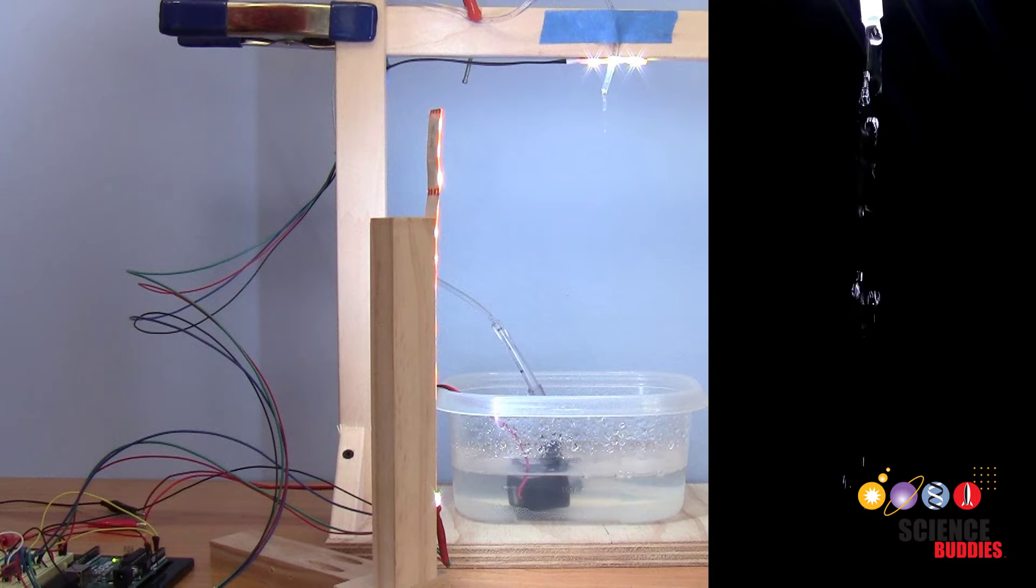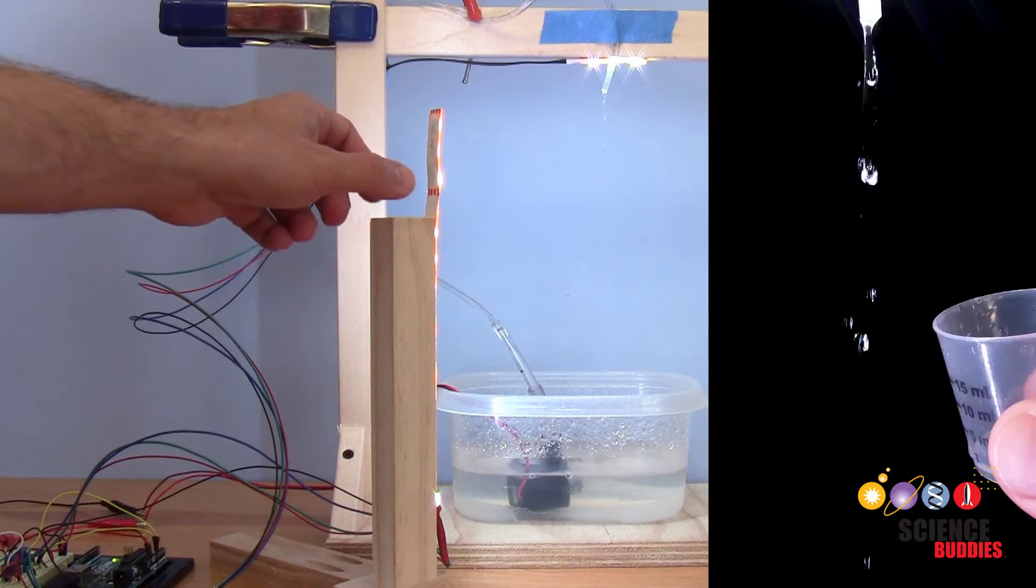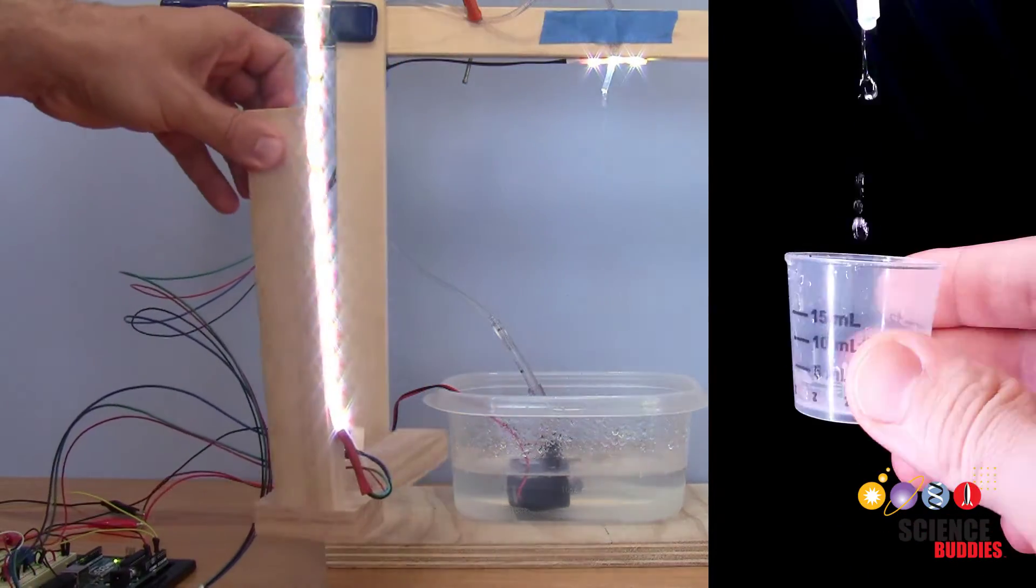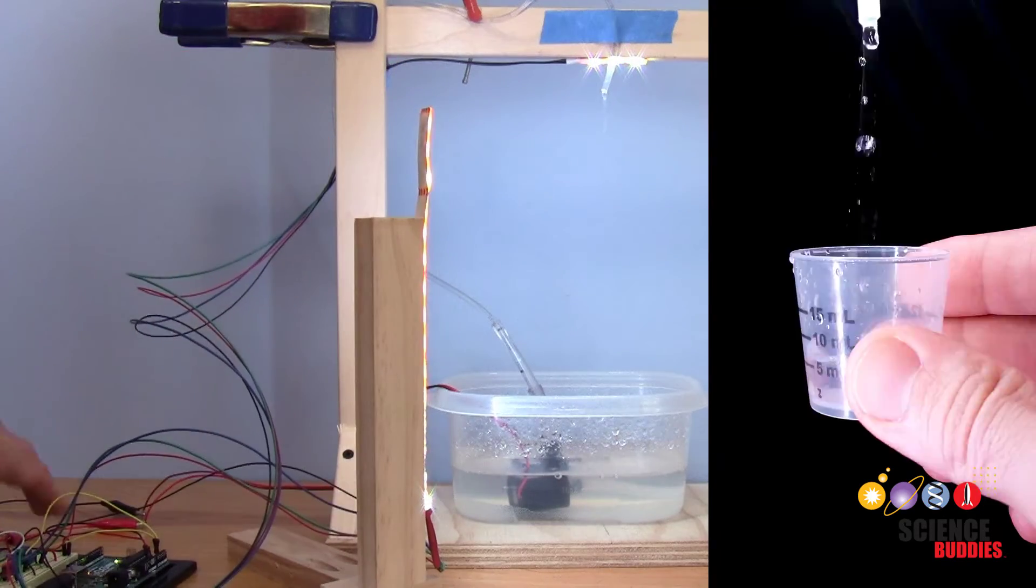Make your own programmable strobe light for a stroboscopic water fountain. This fountain creates an optical illusion where it looks like drops of water are falling up.